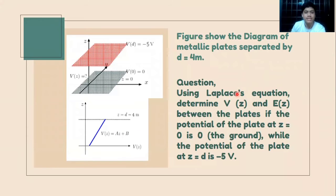The question is: using Laplace's equation, determine V(x) and E(x) between the plates if the potential of the plate at z = 0 is 0 (the ground), while the potential of the plate at z = d = 4 meters is -5 volts.